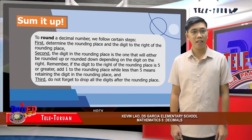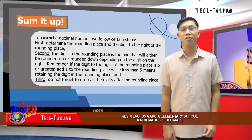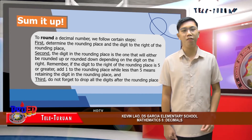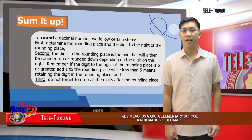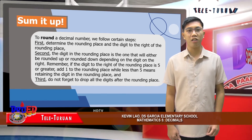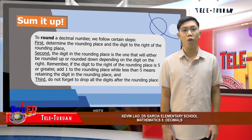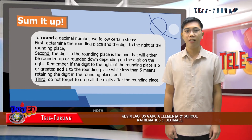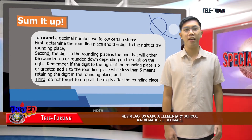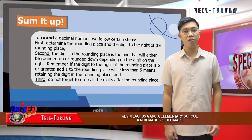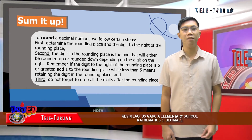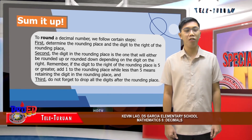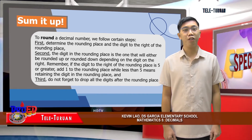Lastly, to round a decimal number, we follow certain steps. First, determine the rounding place and the digit to the right of the rounding place. Second, the digit in the rounding place is the one that will either be rounded up or rounded down depending on the digit on the right. Remember: if the digit to the right of the rounding place is five or greater, add one to the rounding place; while less than five means retaining the digit in the rounding place. Third, do not forget to drop all the digits after the rounding place.